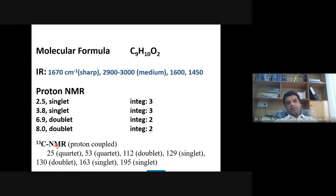Carbon-13 proton coupled spectrum is also given, so we have a quartet at 25, a quartet at 53, a doublet at 112, singlet at 139, doublet at 130, singlet at 163, and a singlet at 195.